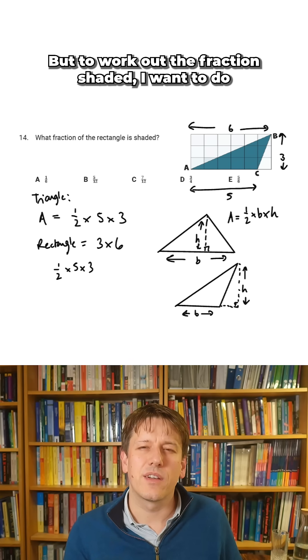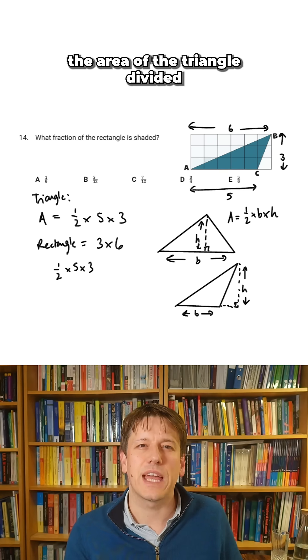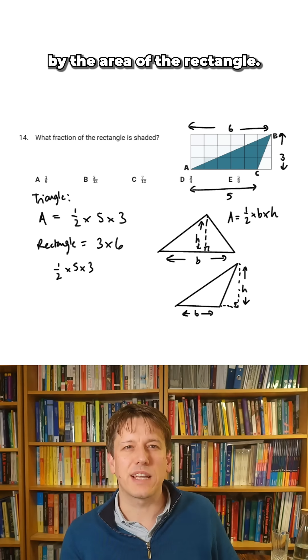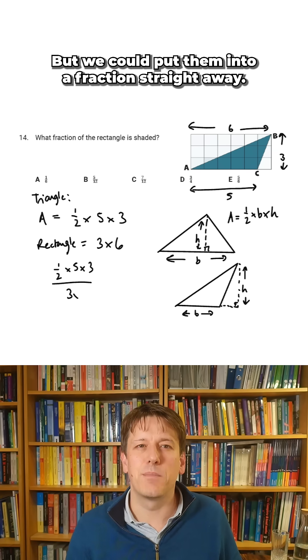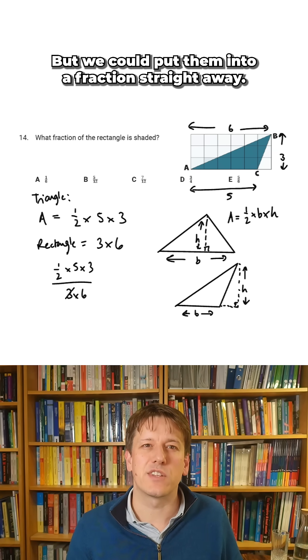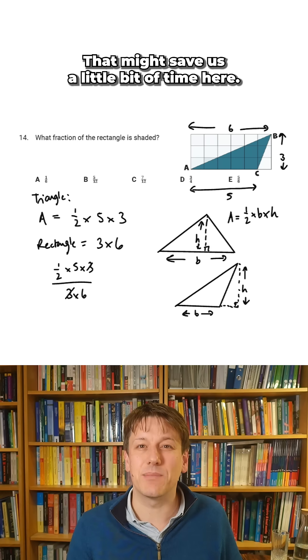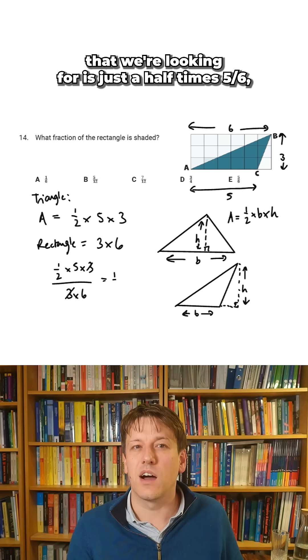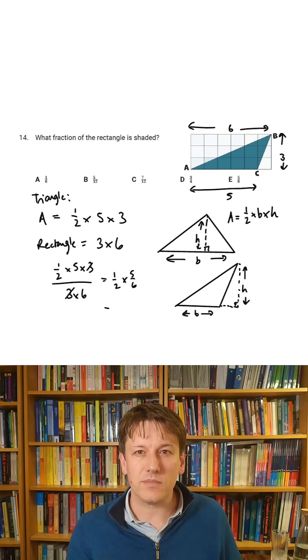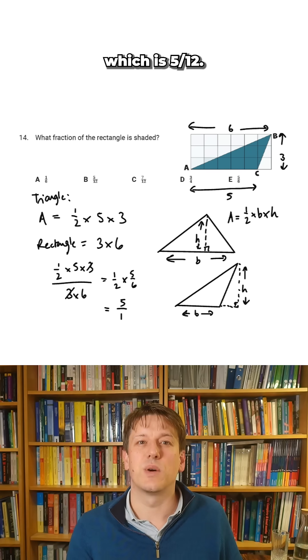But to work out the fraction shaded, I want to do the area of the triangle divided by the area of the rectangle. Now you could just work out these numbers and then put them into a fraction. But we could put them into a fraction straight away, then we could cancel out the threes, that might save us a little bit of time here. And then we can see that the answer that we're looking for is just a half times five sixths, which is five twelfths.